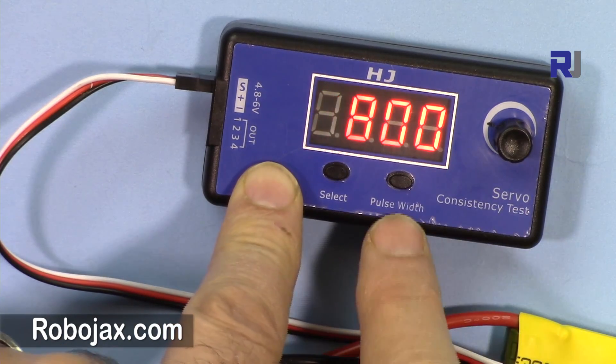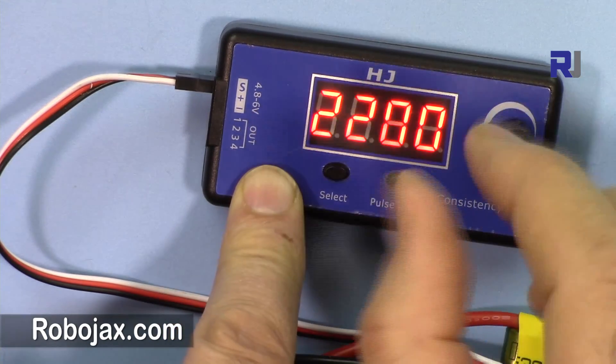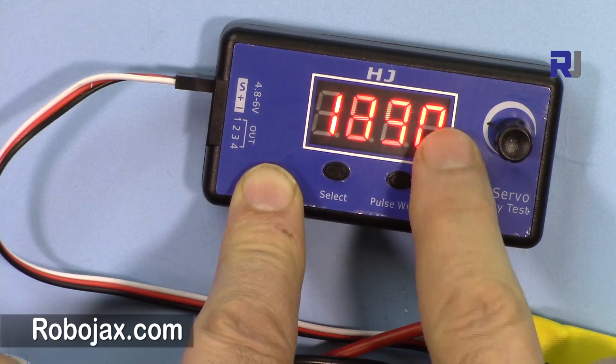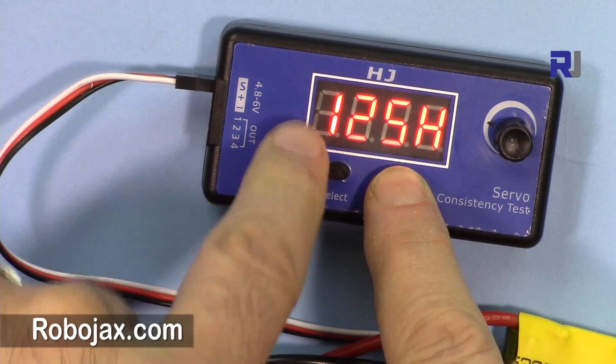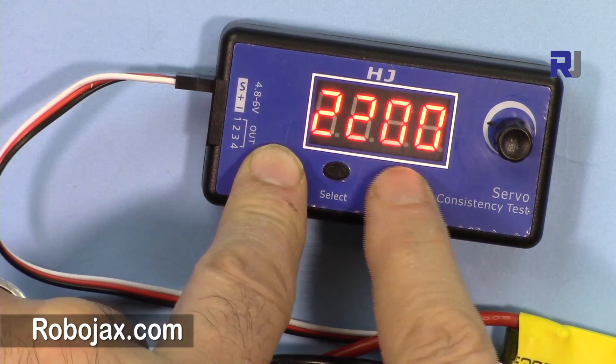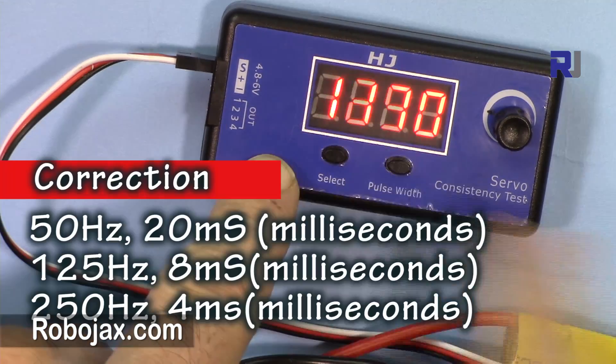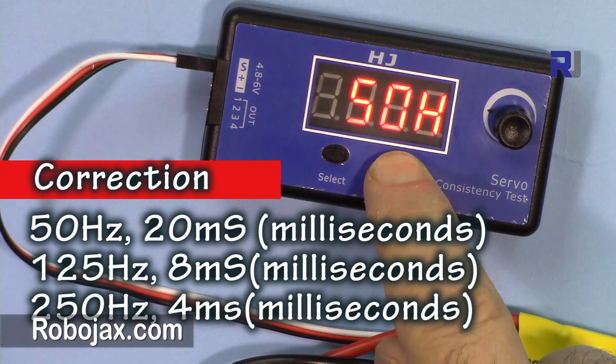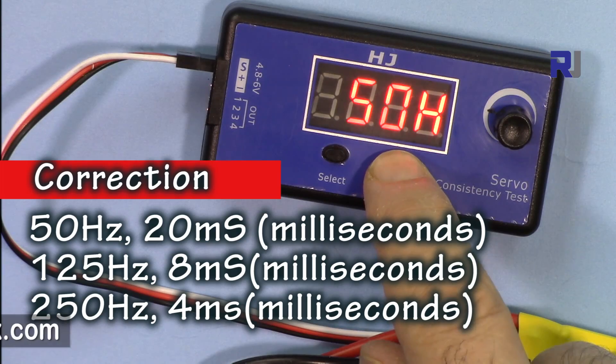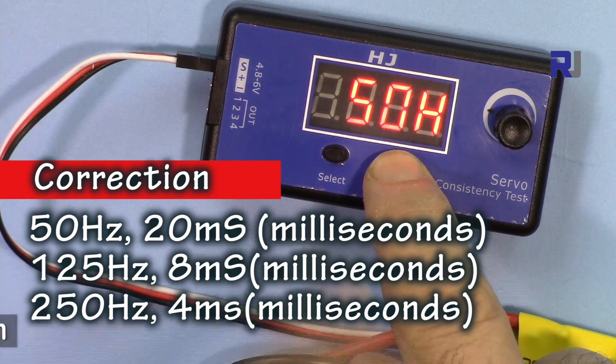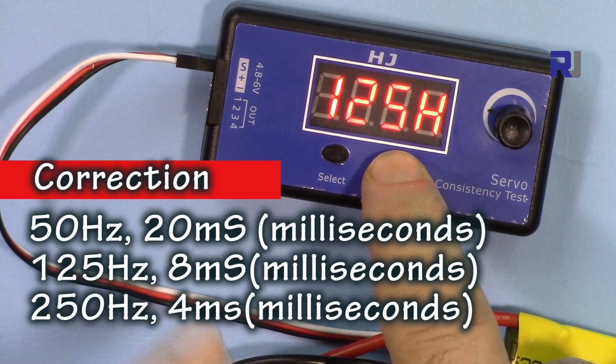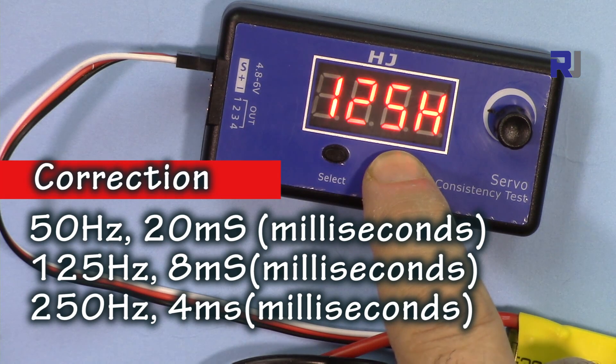This is for the digital servo. If you have digital servo and you want to set the width of the signal, that's very important. It's 125 now. If I press it again it's 250. The 50 hertz is 20 microseconds. If you do it in terms of time, 1 over 50, and then we have 125 hertz which is 8 microseconds.